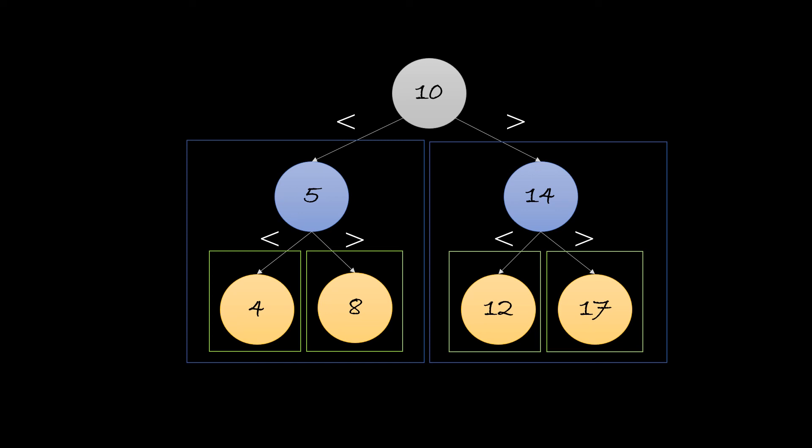Now the pivot or the mid will be 14 and as 12 is less than 14, we will search in the left of it. Here there is only one node which is also our required value. So we can say 12 exists in the data given.